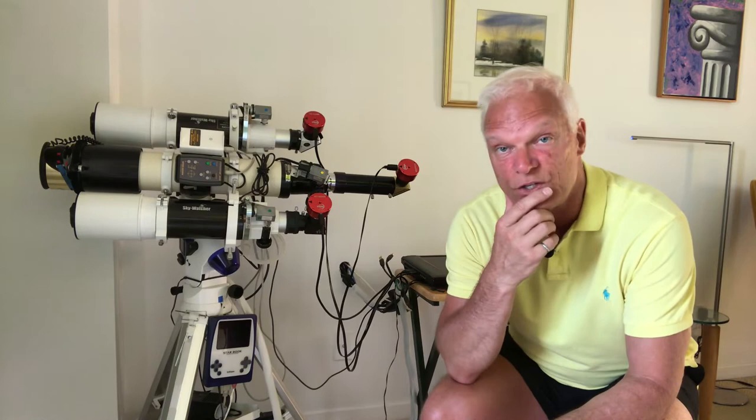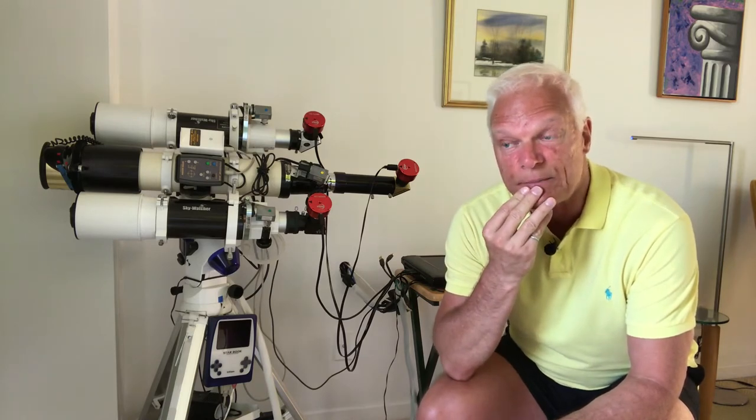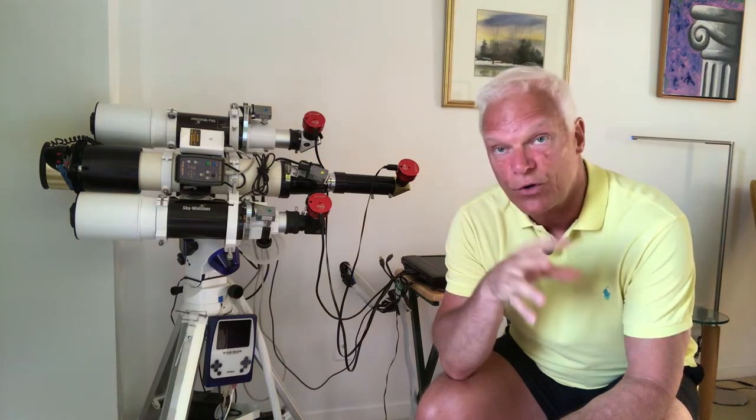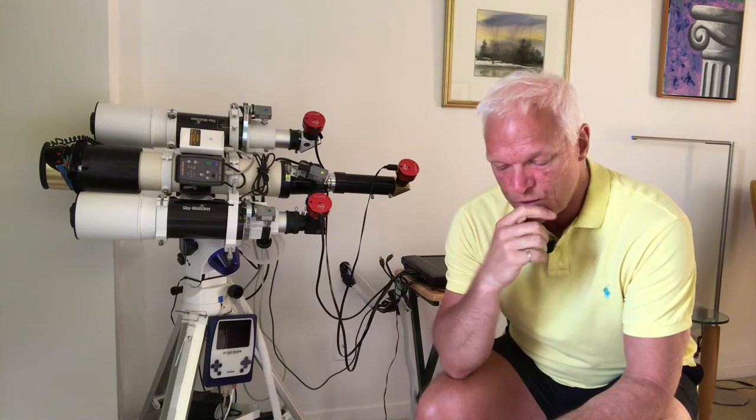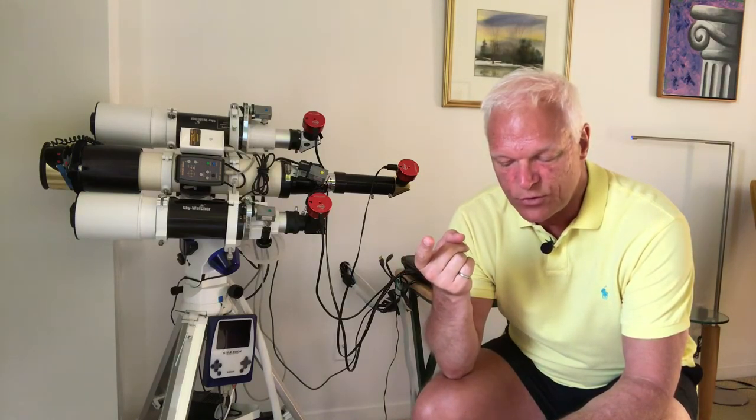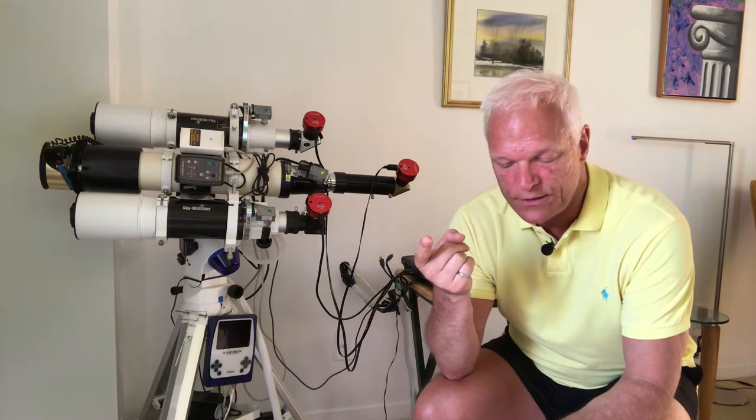I bought it from Europe because the Herschel wedges, this is a one and a quarter inch size wedge, those that come from Lunt in North America have a filter in them and I wanted that removed. So it turned out that in Germany they sell the Lunt wedge without the filter so I ordered from them.